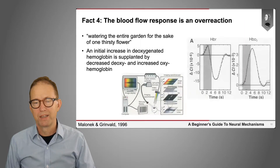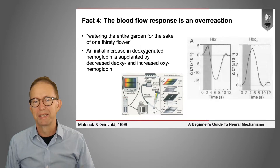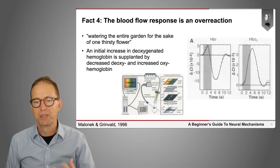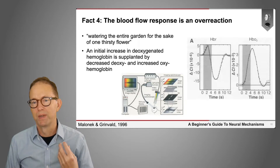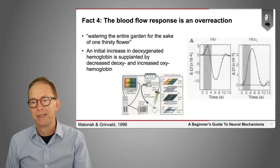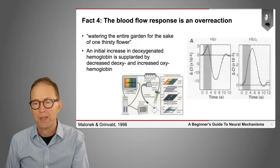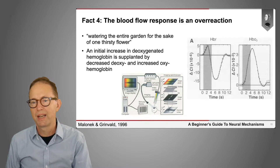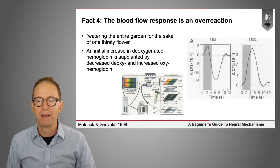Interestingly, that blood flow response turns out to be an overreaction in terms of the amount of oxygen being used — sometimes referred to as 'watering the entire garden for the sake of one thirsty flower.' This was first discovered using optical imaging. Very early after a stimulus is presented, there's a slight blip up in deoxygenated hemoglobin. But then, over the course of seconds, there's a very large surplus of oxygenated hemoglobin — the vasculature sends more oxygen than is needed to meet the metabolic demands of the tissue.